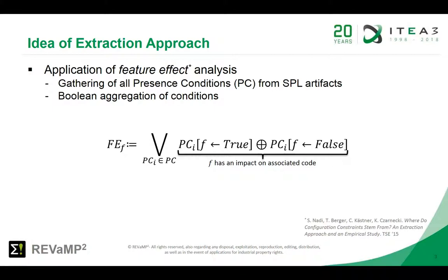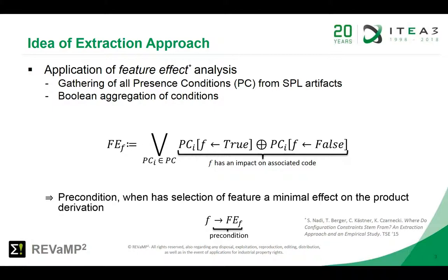Next we compute for each feature how the resulting product will change as the feature is selected or deselected. For this we take all conditions where the feature is involved in and select and deselect that feature. Both versions of the condition are combined via an XOR. The XOR constraints are combined via a disjunction. The resulting constraint does not contain the selected feature anymore and can be interpreted as a precondition when the selection of the feature has an impact to the product derivation.